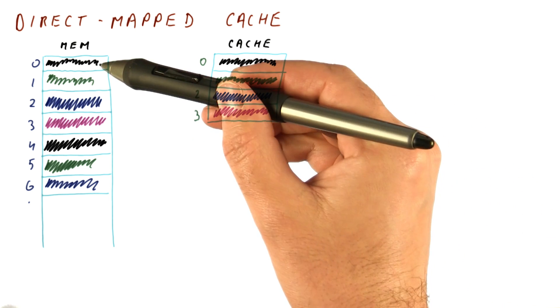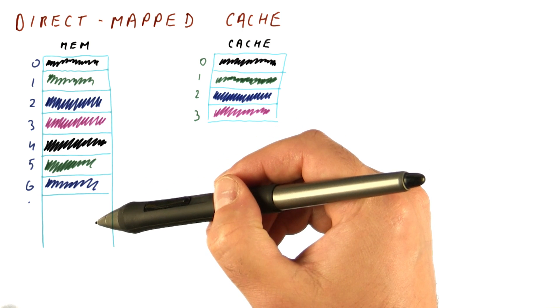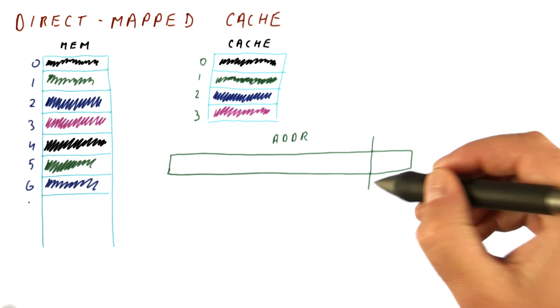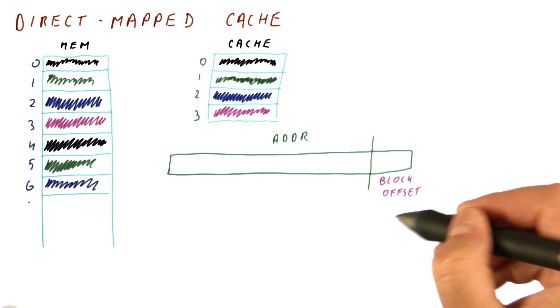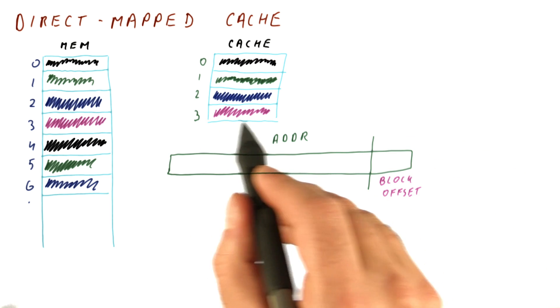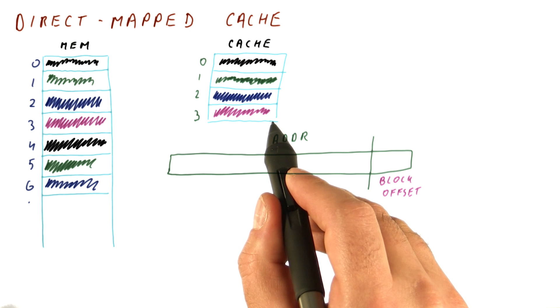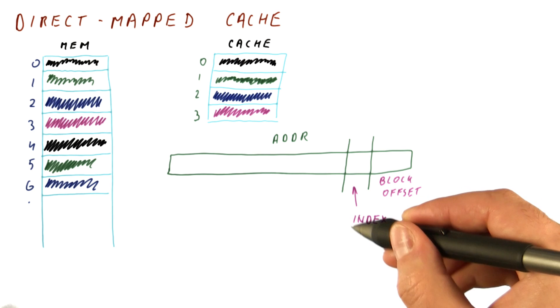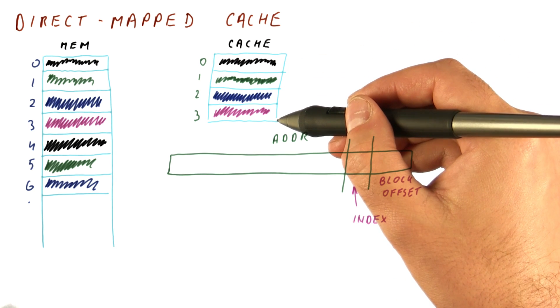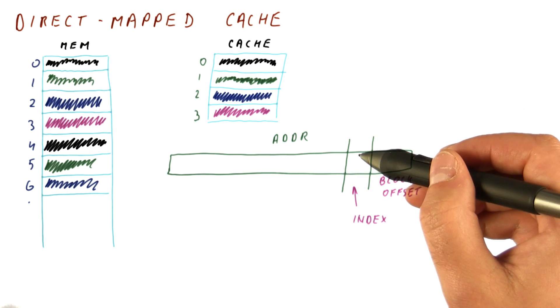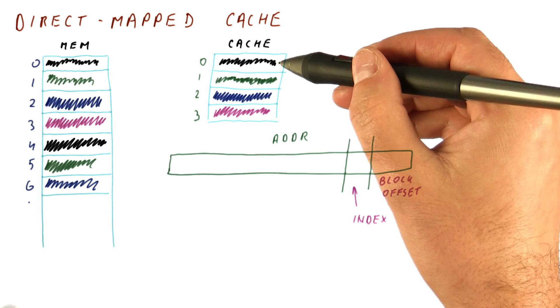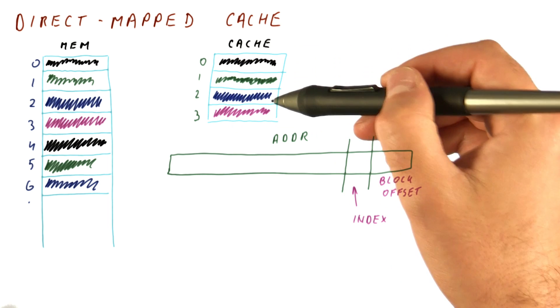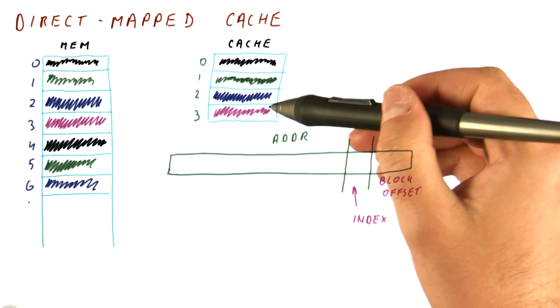So pretty much for any given block address, there is only one place in the cache where that address can be. If we look at a memory address, the least significant bits are still the block offset. They tell us where in the block are we, assuming that we find the block. The block number now contains some bits that tell us where in the cache this block can be. The index bits need to be sufficient to tell us which of the lines in the cache are we talking about. So if there are four lines in the cache, then we need two index bits to tell us where a block can map.